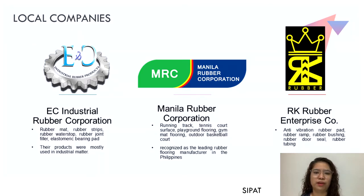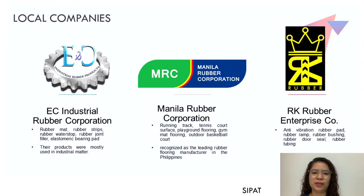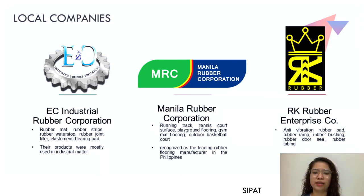Second is Manila Rubber Corporation, a business specializing in the production of rubber soling material. They have expanded their product line to include durable rubber floorings in the form of tiles, rolls, sheets, and bricks, and are considered the leading producer of rubber flooring in the Philippines. Their products include outdoor basketball courts, running tracks, tennis court surfaces, playground flooring, and gym mat flooring.